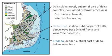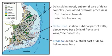The sub-aerial or above-water part is called the delta plain. It includes the river channels, which are called distributary channels. It may include shallow bays between those channels called interdistributary bays. It may include beaches or tidal flats or tidal channels, depending on the relative importance of fluvial, wave, and tidal processes on the delta.